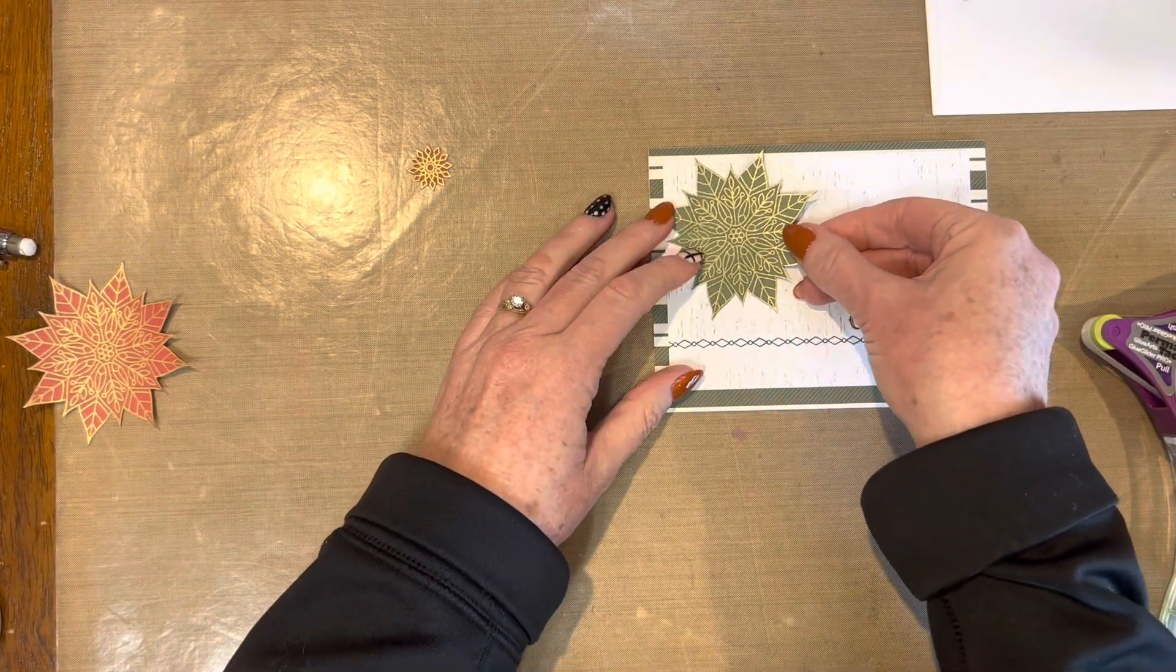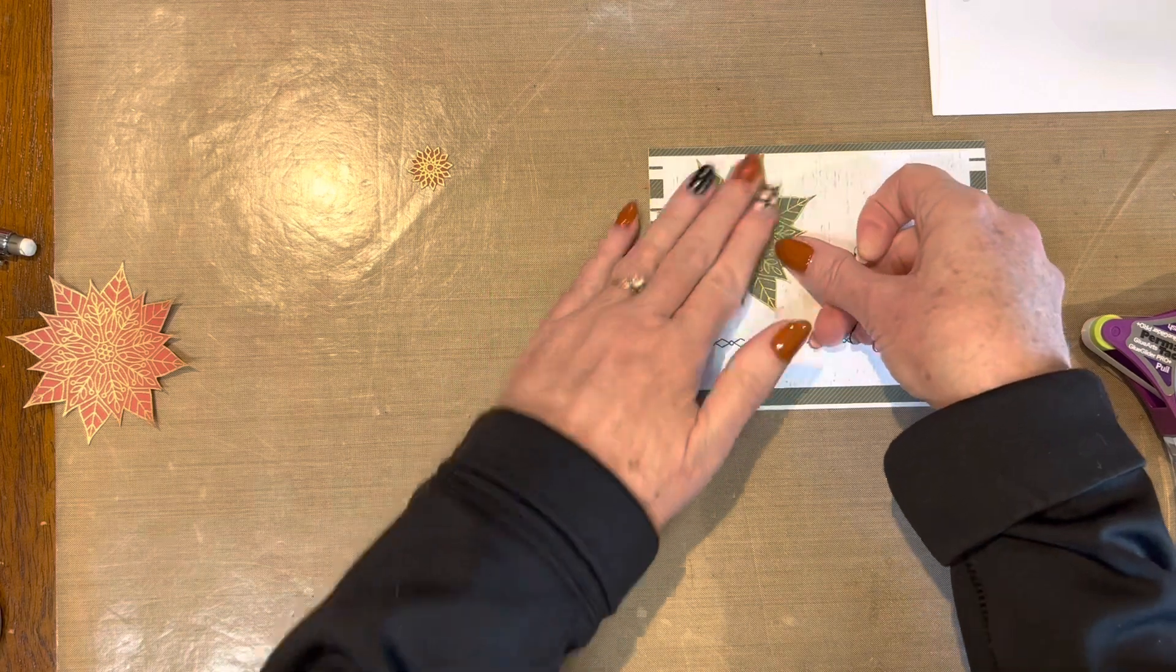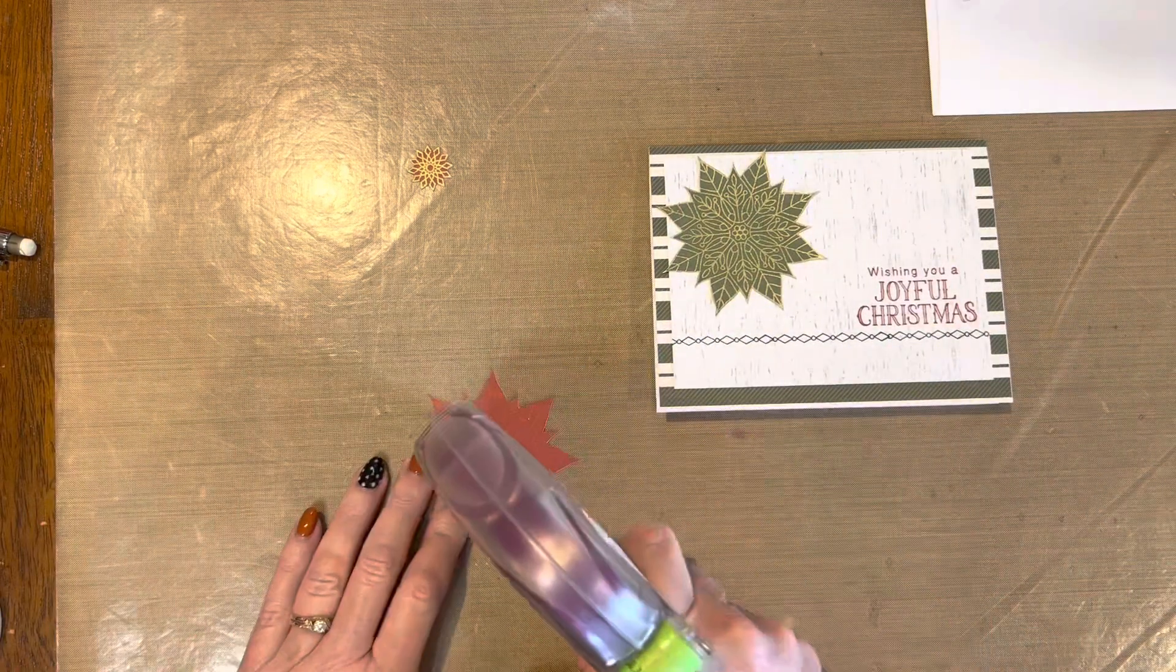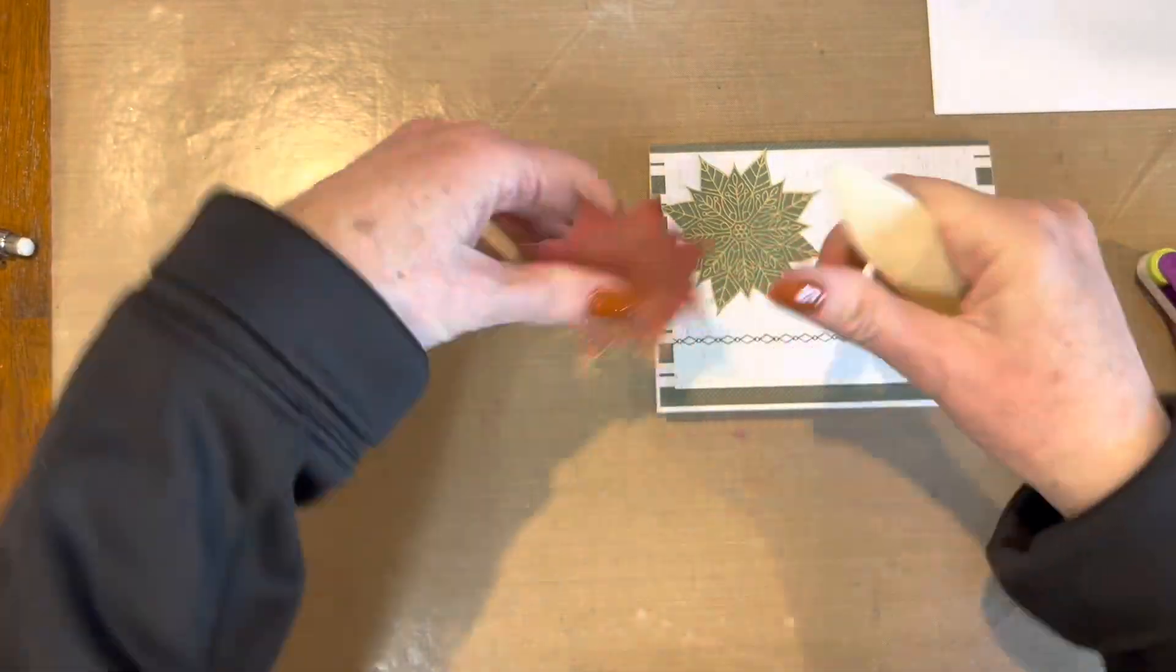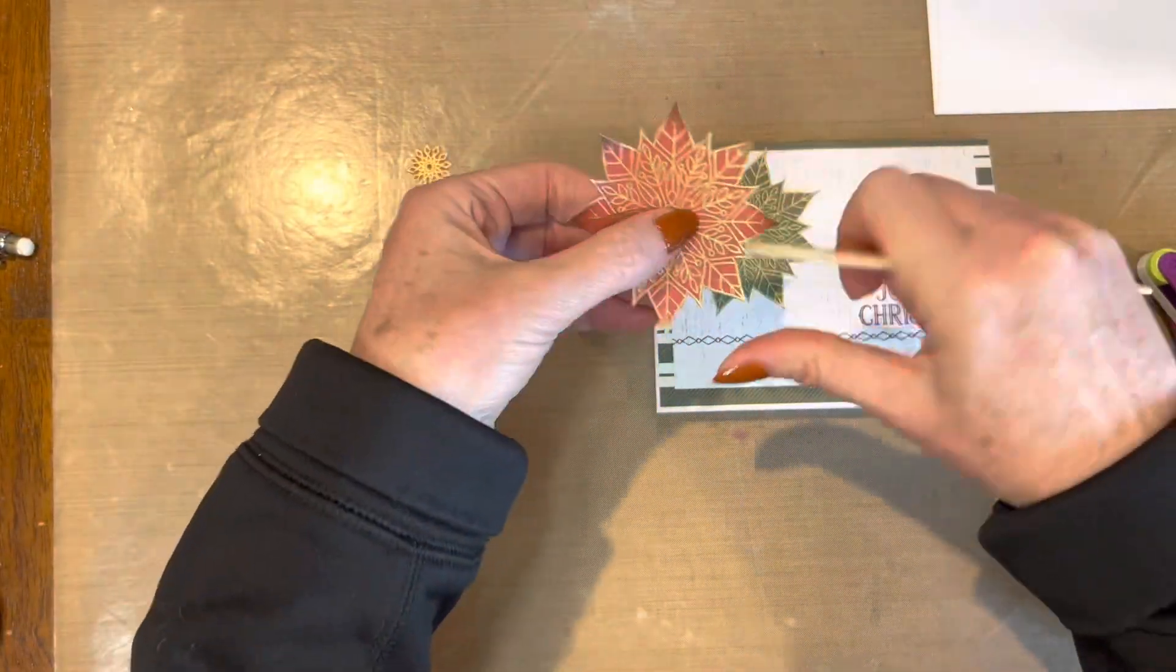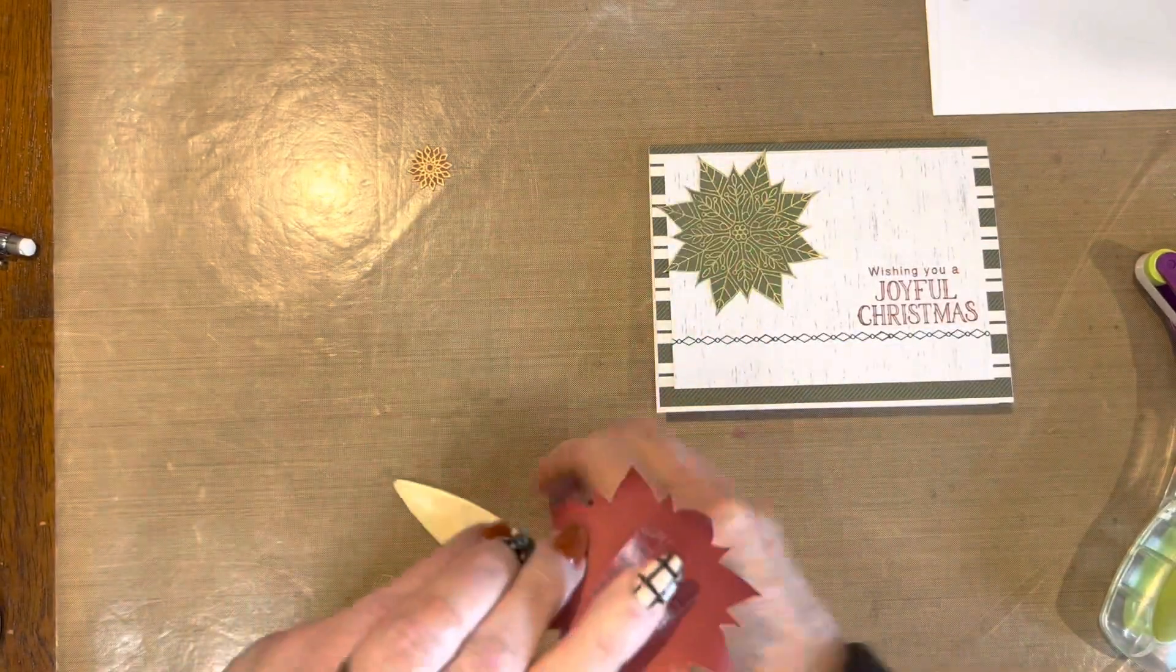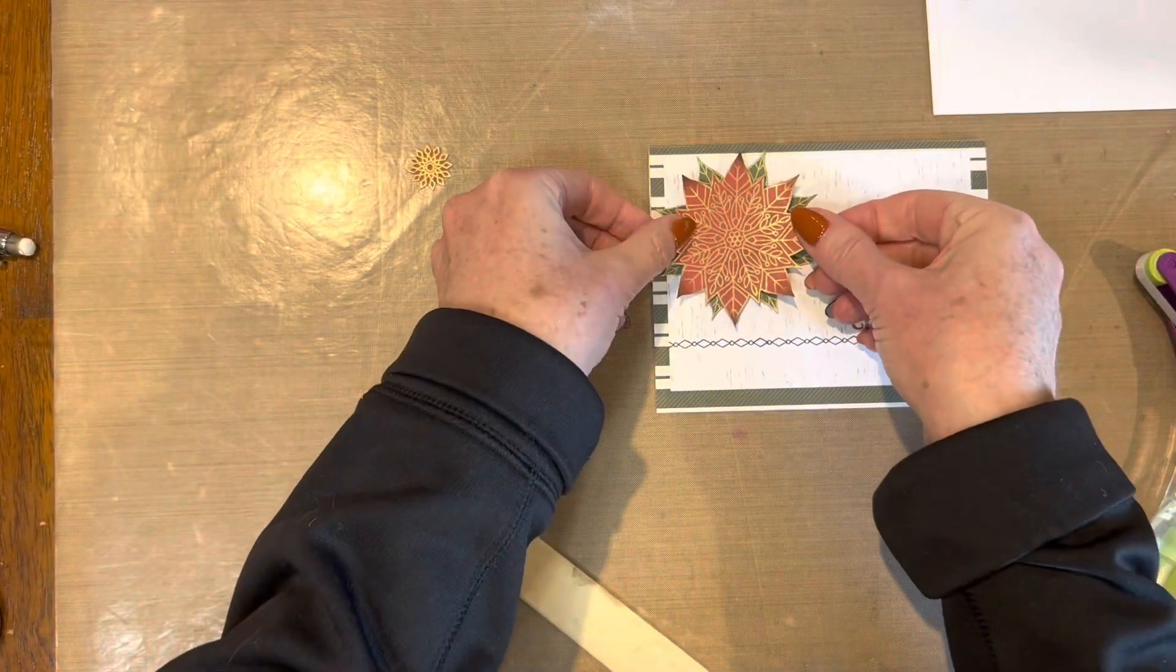Then I curled up the edges of the Scarlet one. I just put a little bit of adhesive in the center on the back of that, and then I curled it up with a bone folder just to give it some dimension. If you looked at my still shots, it looked almost like there was a blue ink layer underneath the flower.